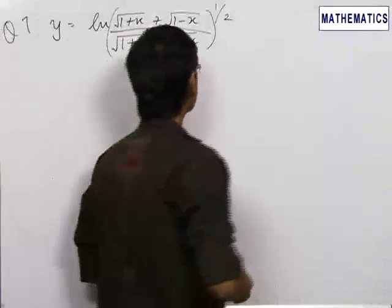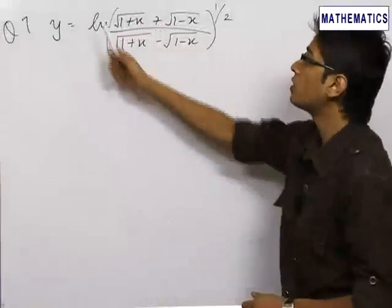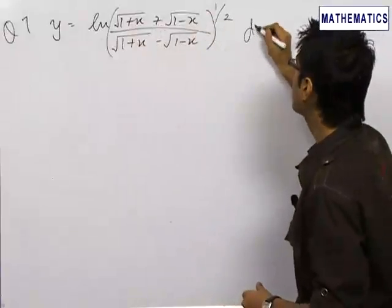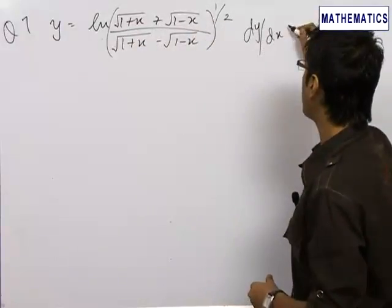Now, the seventh problem which we have is given: y equals ln of this big term, and we need to find the value of dy/dx.